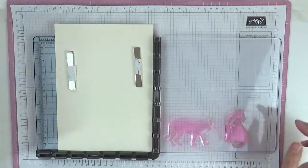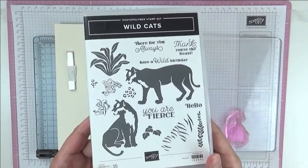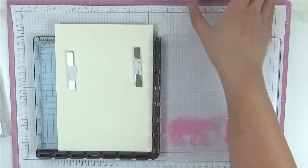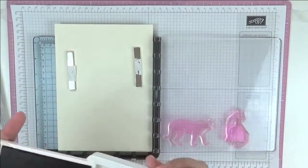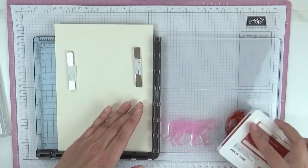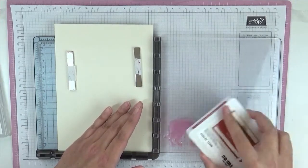So we're going to be stamping some tigers. We're going to use this set that's called Wildcats as you can see. So I've got everything set up on my Stamperatus. We're going to stamp initially in Cajun Craze ink. So I'm just going to ink everything up nicely.